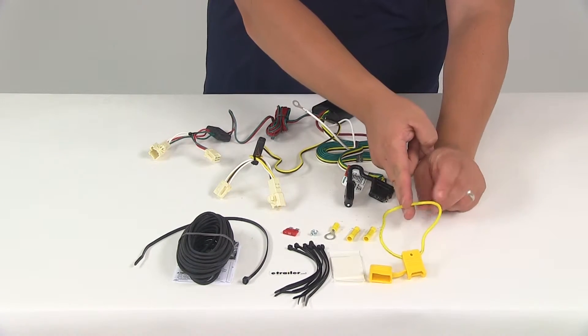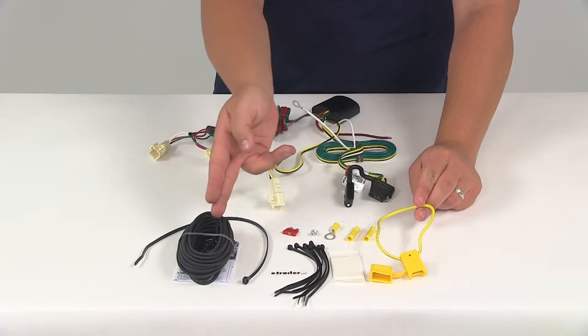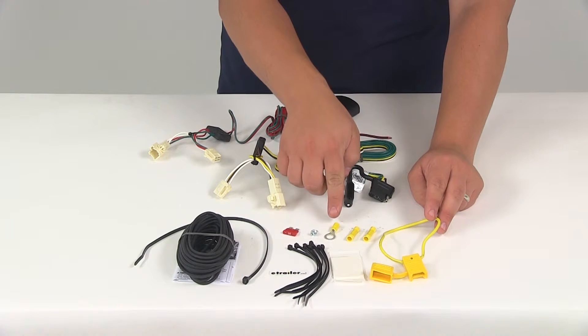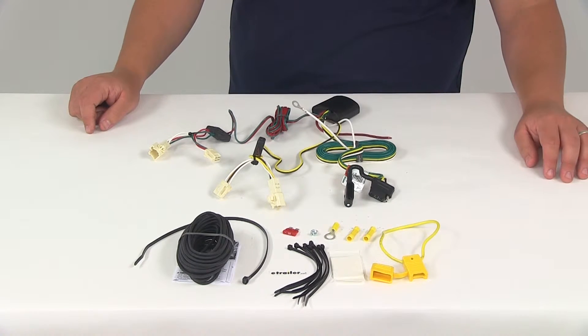The fuse holder is going to have to be cut right there, and one end is going to connect to the bundled black wire with the butt connector. The other end is going to get the ring terminal attached to it, and that's going to attach to the positive post on the vehicle battery.